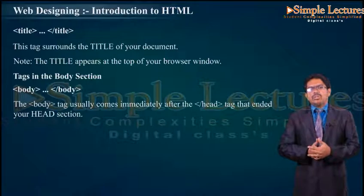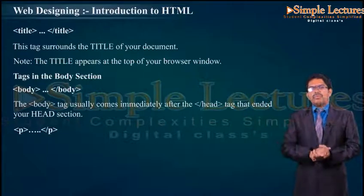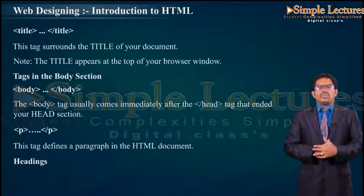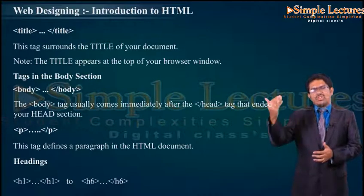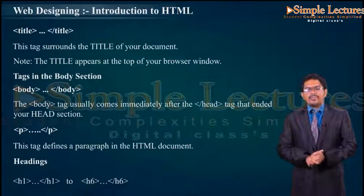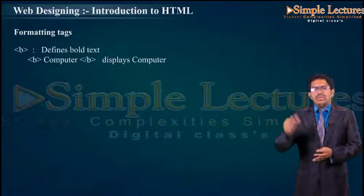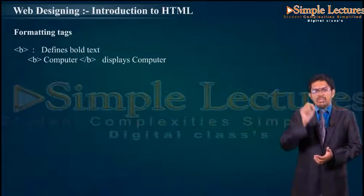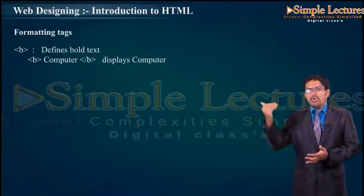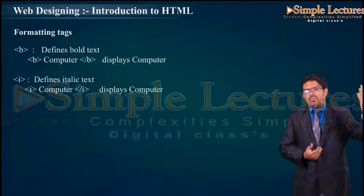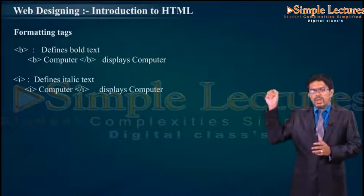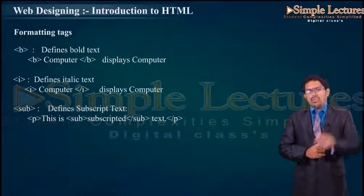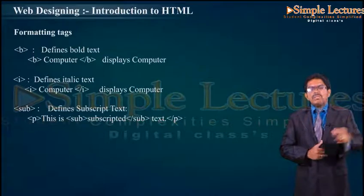Tags in the body section: &lt;p&gt;&lt;/p&gt; represents a paragraph — this tag defines a paragraph in an HTML document. Headings are H1 to H6; whenever we start a heading, there should be a closing tag. Formatting tags: &lt;b&gt; defines bold text — for example, placing 'computer' in &lt;b&gt; tags displays it in bold. The same text can be represented in italic using the &lt;i&gt;&lt;/i&gt; tag. &lt;sub&gt; indicates subscripted text — the value will appear in subscript form.